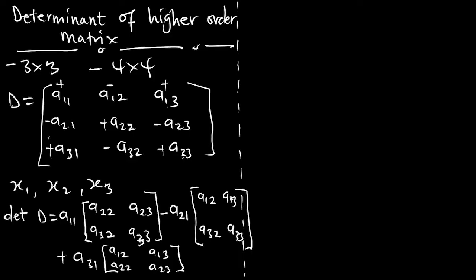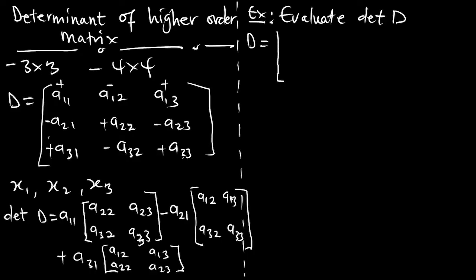This is the formula and the approach. Once you understand it, you can start straightforwardly. You can find the determinant of each 2x2 sub-matrix and multiply by the corresponding element value. Then do your additions and subtractions to get a single value. Let's evaluate an example. Evaluate delta of D such that D equals this matrix: 3, 2, 1; 2, 1, negative 3; 4, 0, 1. We have to evaluate this 3 by 3 determinant.